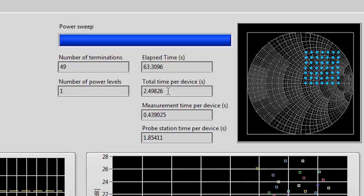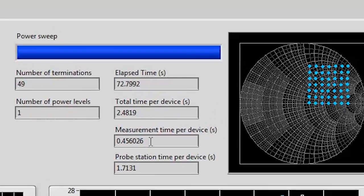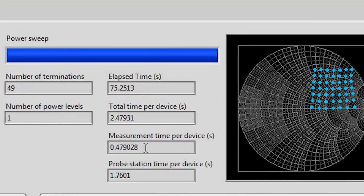We are now measuring a total of 47 devices and the total time it takes to measure each device is only about two and a half seconds. The measurement time though is only about 0.4 seconds while the rest of the time is needed for moving the probe station from one device to the other.